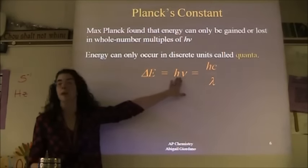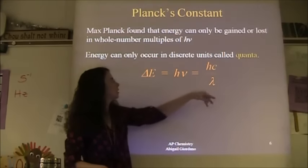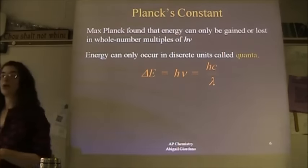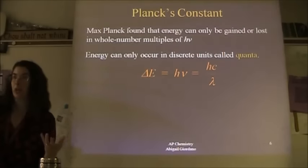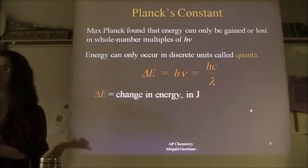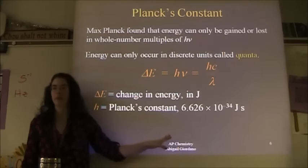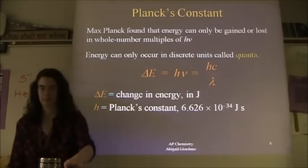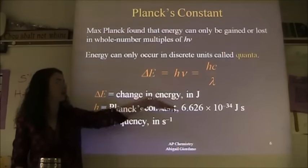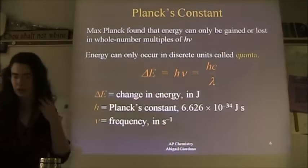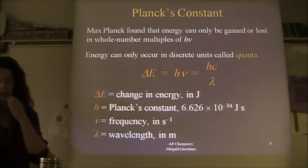Another equation on your equation sheet lets us calculate the energy of an electromagnetic wave: E = hν, where E is energy in joules, h is Planck's constant (don't memorize it, it's on your equation sheet), and ν is frequency again. You can also write it as E = hc/λ, where lambda is your wavelength. Nothing to memorize here.